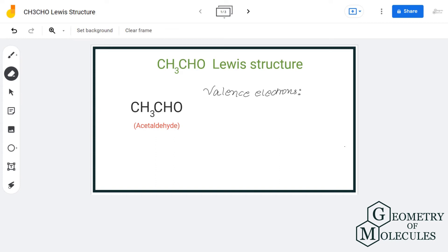Hi guys, welcome back to our channel. In today's video, we are going to help you with the Lewis structure for CH3CHO molecule. It's a chemical formula for acetaldehyde. To determine this Lewis structure, we are first going to look at the total number of valence electrons.